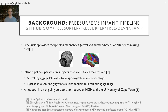Let me back up a bit. I work in the neuroimaging lab that releases FreeSurfer, a software package that provides morphological analyses of neuroimaging data. For example, you give it an MRI like the one on the left, and it will segment the brain into various structures and compute a bunch of statistics. The infant pipeline operates on subjects that are 0 to 24 months old, which is a challenging population due to the morphological and MR contrast changes during this time period.